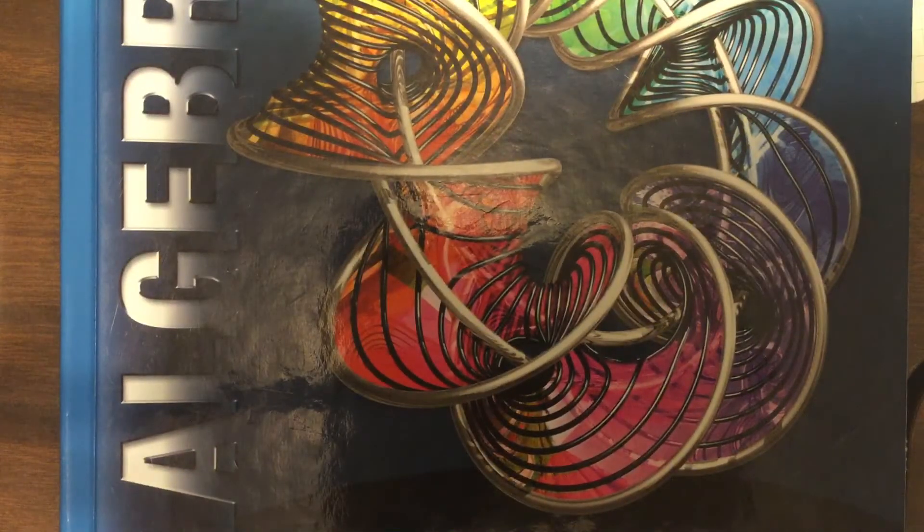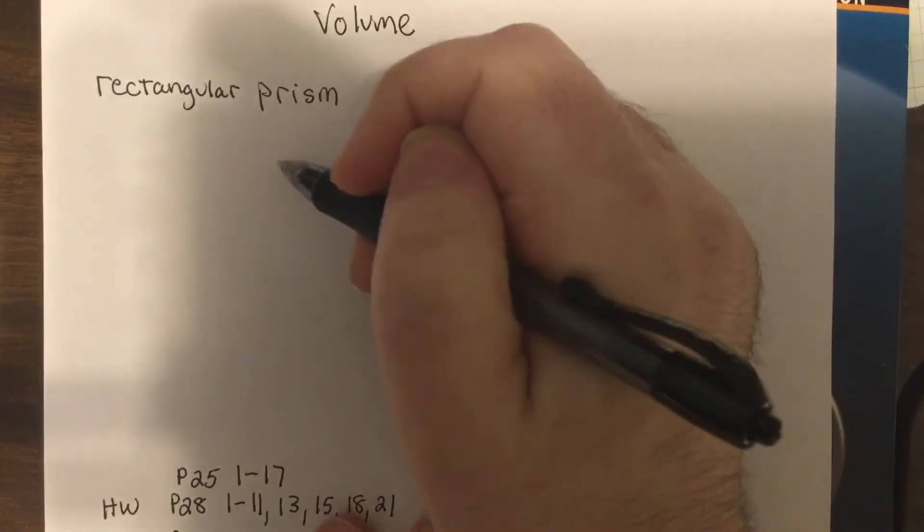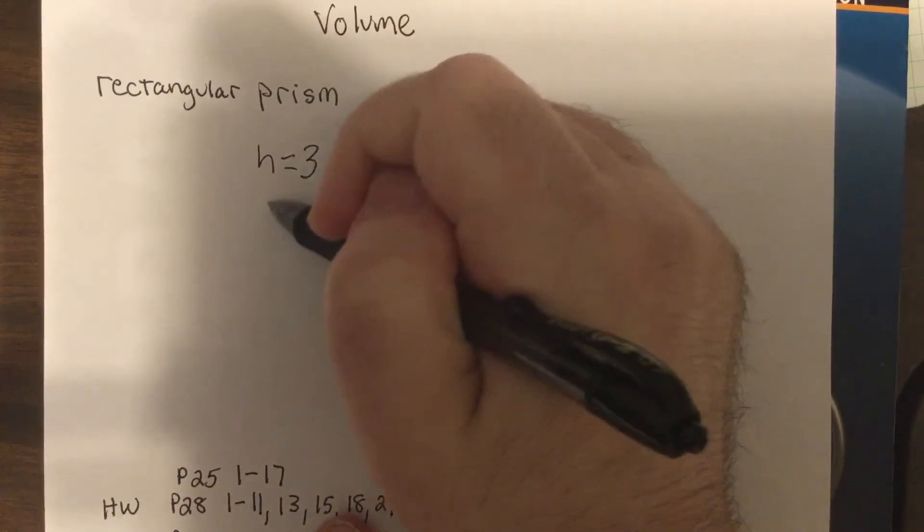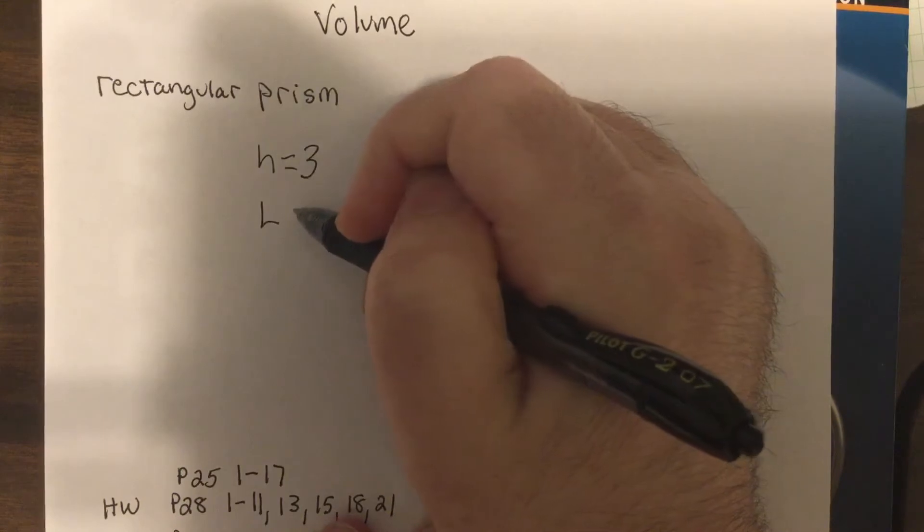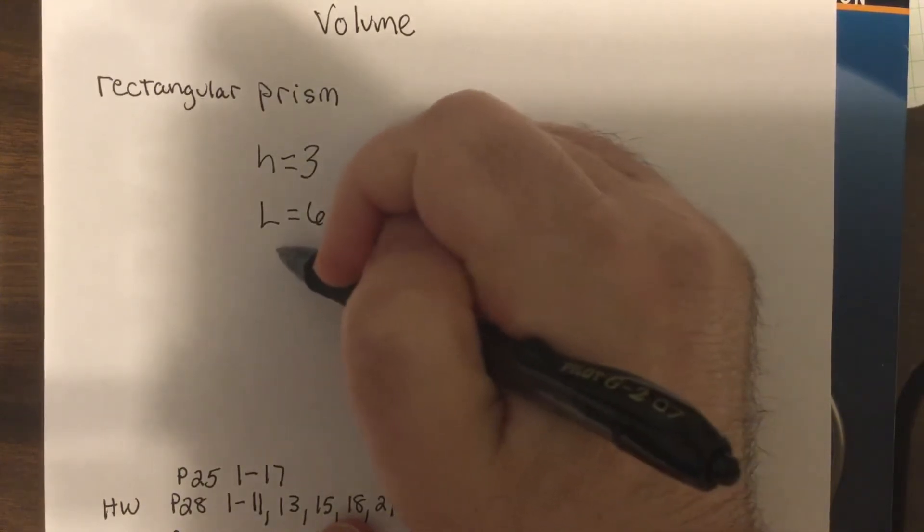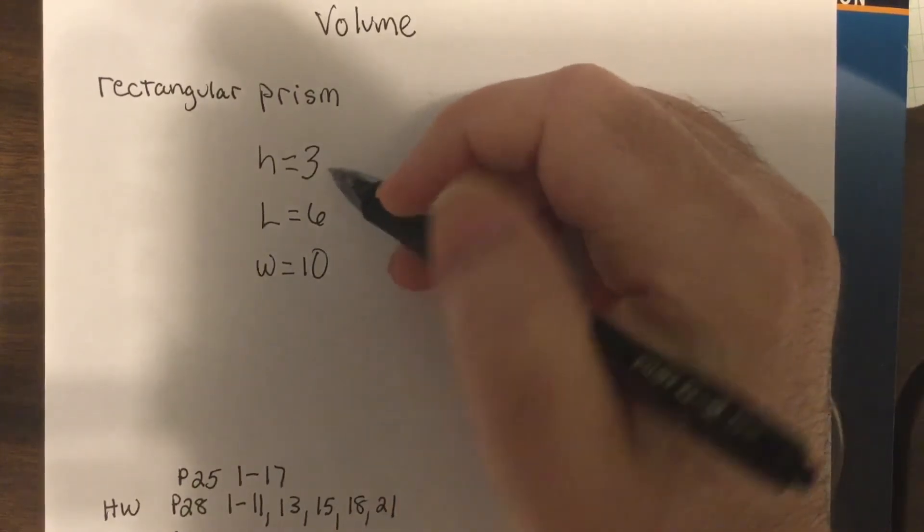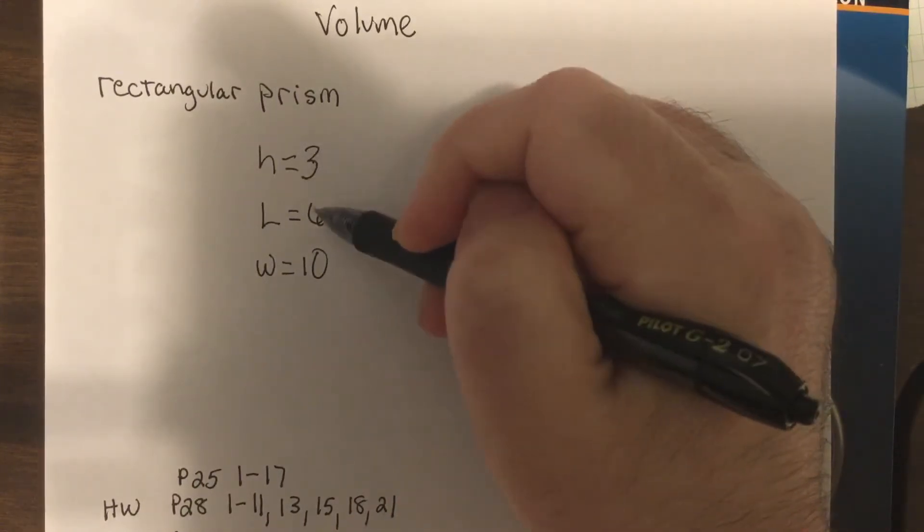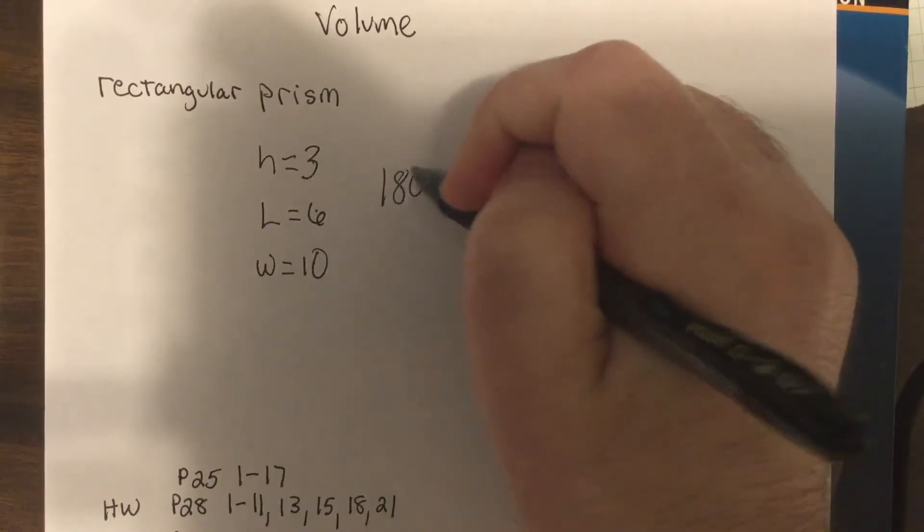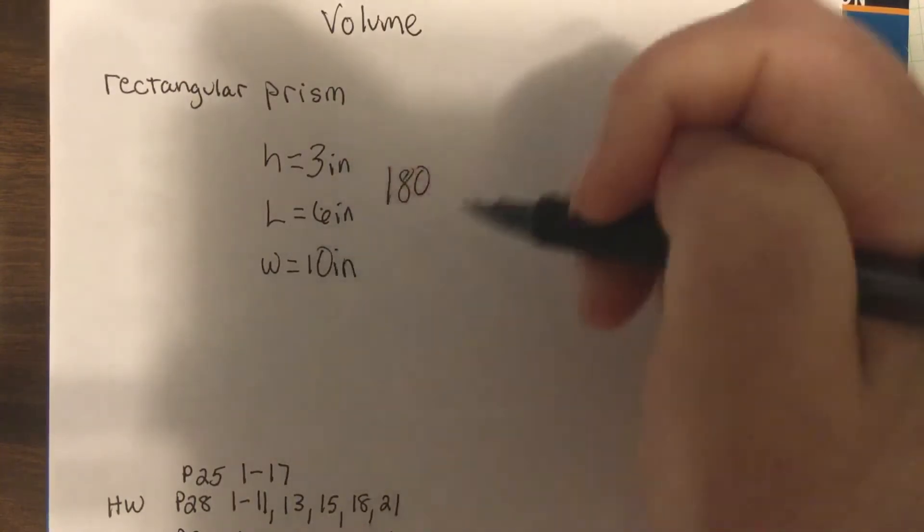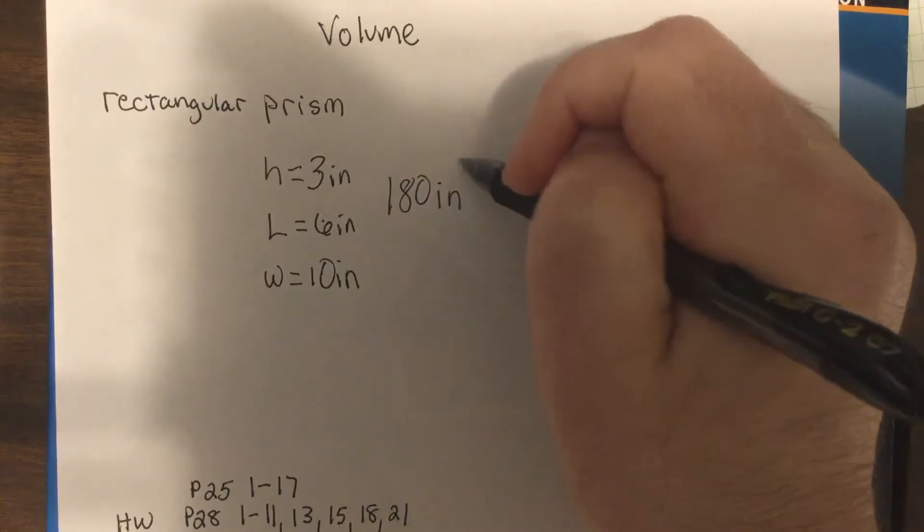So to find the volume, you actually have to multiply all three directions. So if I tell you it has a height of three, a length of six, and a width of ten, to find the volume you would go three times six times ten. That's 18 times 10 is a hundred, and let's say it's inches. Now for volume it'd be inches cubed.